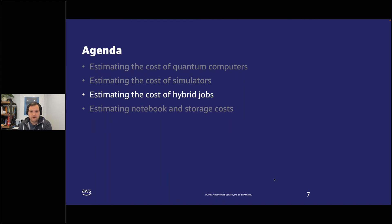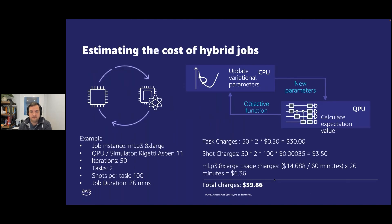The next topic is the cost of hybrid jobs. Hybrid jobs consist of using a classical compute component and a quantum component. You are charged both for the usage of the classical instance that runs part of your hybrid algorithm and the number of iterations you wish to run, and then you get into the task and shot model familiar from the quantum computing section. The entire duration of the job is also taken into account, and the main charge is going to be the classical EC2 instance.